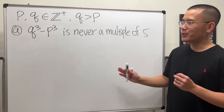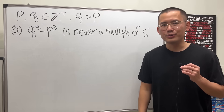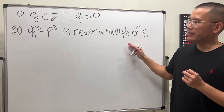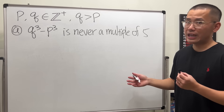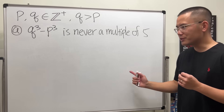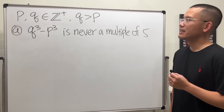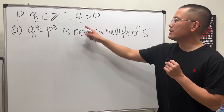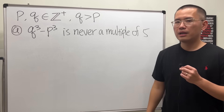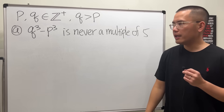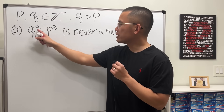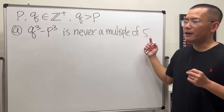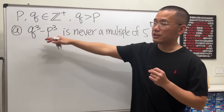Today let's try the last question from the 2023 A-level math exam. This is question number three — it's more of a proof type of question, which is pretty interesting. We have p and q being positive integers with q greater than p. Part A asks us to show that q³ minus p³ is never a multiple of five.